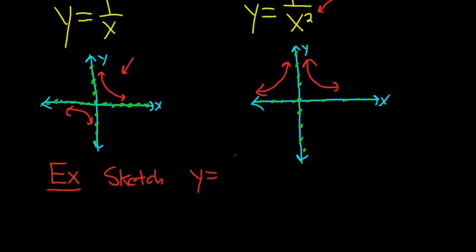Sketch y equals 1 over x plus 2. When you have something like this, you first have to decide which function you're using: is it 1 over x or 1 over x squared? In this case, it's 1 over x because the x is not squared. We start by thinking about this graph, 1 over x with our little asymptotes.